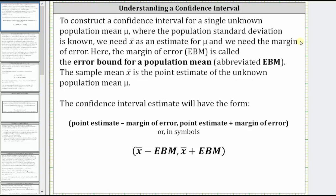Here the margin of error is called the error bound for a population mean, abbreviated EBM. The sample mean x̄ is the point estimate for the unknown population mean μ.